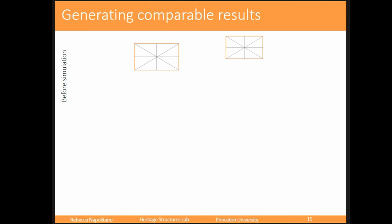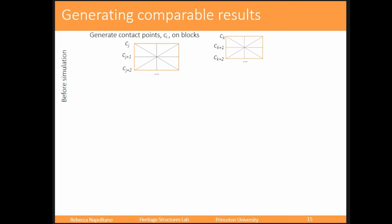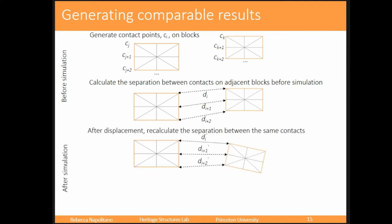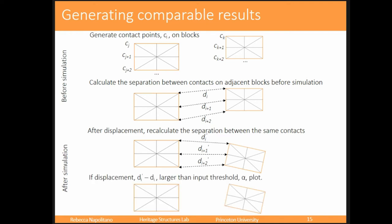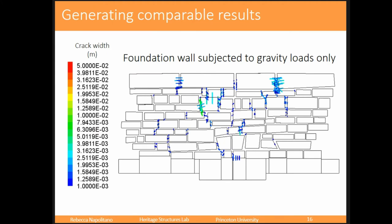So we wrote code that generates the contact points on all of the blocks, and before any simulation it calculates the distance between those two adjacent blocks to start. Then after running the simulation, it recalculates the separation between those same contacts. If the displacement is larger than some input threshold — here we used larger than a millimeter to reduce noise — it gets plotted; if not, it doesn't. This is one of the plots we were able to generate using this method of physically measuring where cracks were forming in our structure.